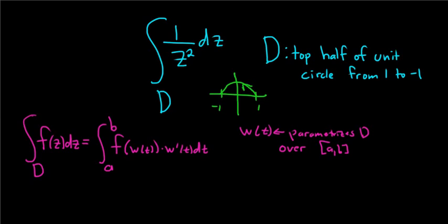So we know we can parametrize the unit circle with the function w of t equals e to the i t. However, we want to stop halfway, so t here will be in the interval 0 to pi. We only want to go halfway around the unit circle.